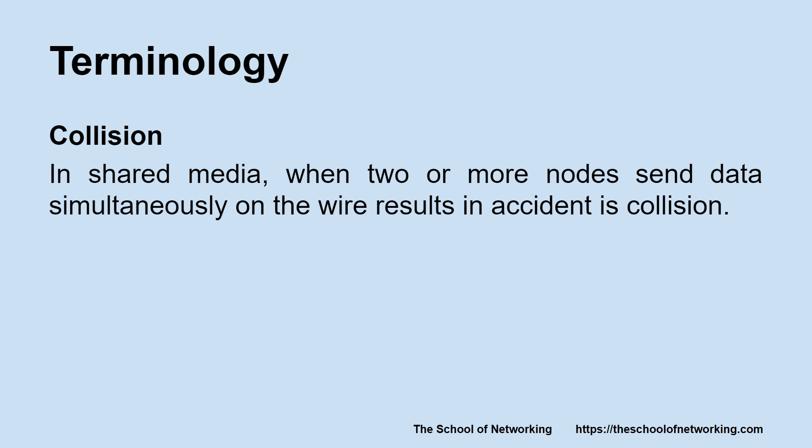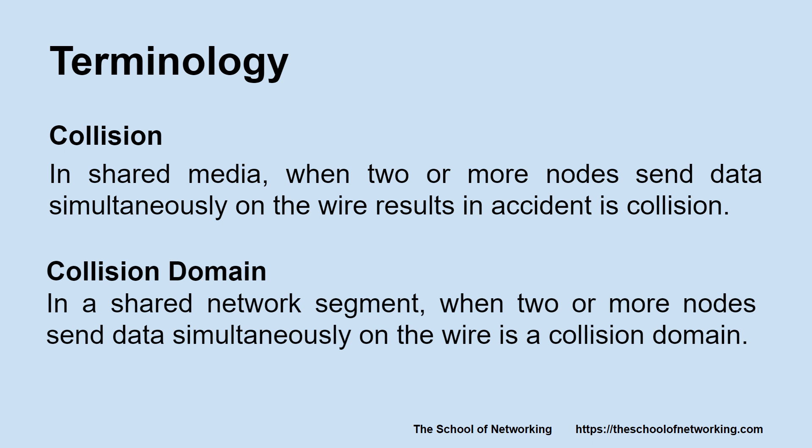What is a collision domain? In a shared network segment, when two or more nodes send data simultaneously on the wire resulting in an accident, it is referred to as a collision domain — it is a shared network segment where a collision can happen.